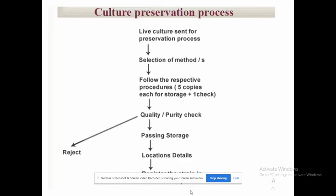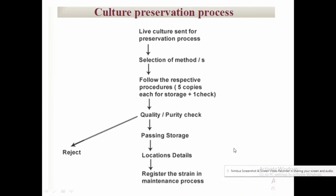The process of culture preservation starts with a live fungal culture that has been isolated. Then you select the method based on the type of fungi — sporulating or non-sporulating. You make 5 copies of each fungal culture plus a control check copy. After preservation, quality and purity are checked before sending to storage. The culture is assigned to different locations, registered, the strain is noted, storage method is documented, and if quality is not good the culture may be rejected.